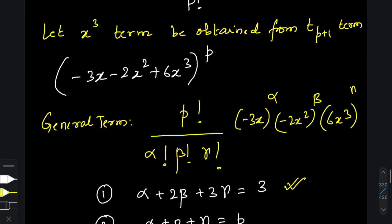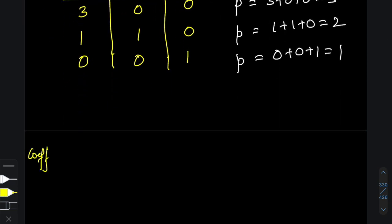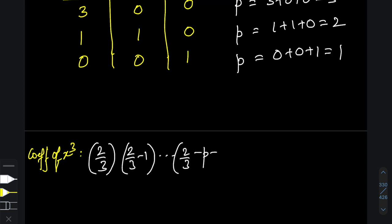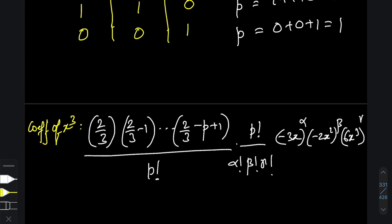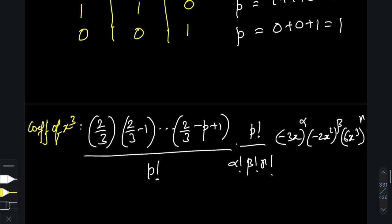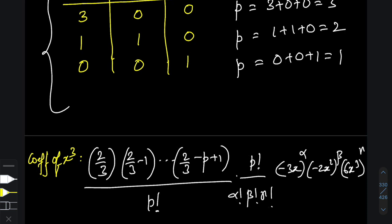Now each of these is part of the bigger (p+1)th term. The coefficient of x³ from each case is: (2/3)(2/3−1)(2/3−2)···(2/3−p+1) over p!, times p! over (α! β! γ!), times (−3)^α (−2)^β (6)^γ. Note: ignore the x variables in those base expressions — we only care about the numerical coefficients. There are exactly three cases of (α, β, γ) that generate x³.